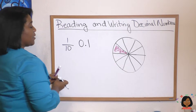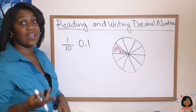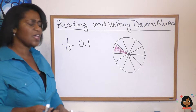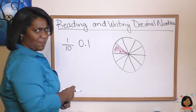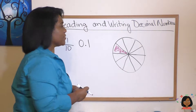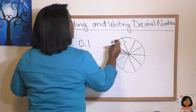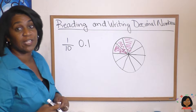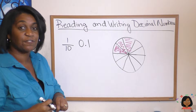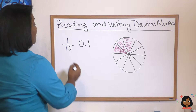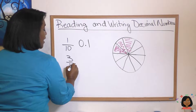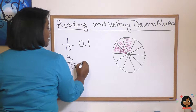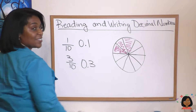That's one tenth because this is in the tenths place. Let's say I was a little hungrier and wanted to eat a few more pieces — it happens, don't judge. I'm going to highlight two more pieces, so in total I've had three pieces of pie. What fraction does that represent? I've had three out of ten pieces, and the decimal for three tenths is 0.3, because we're still in the tenths place.